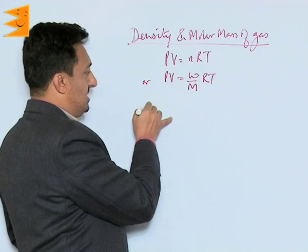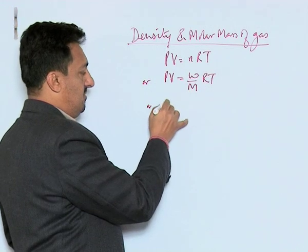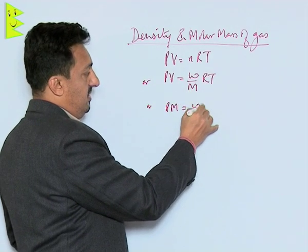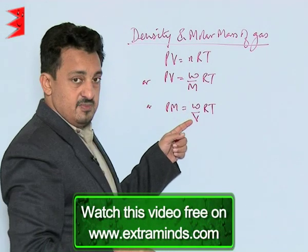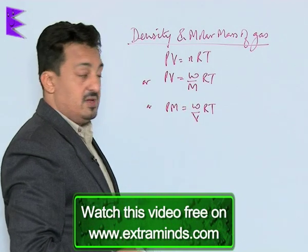Now we can do a slight change. We can bring M here, so it will be PM equals W upon V times RT. Now this becomes your mass upon volume. Mass upon volume is called density.